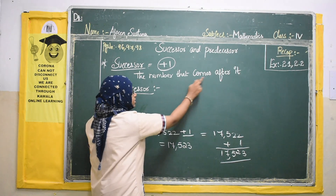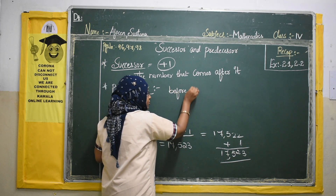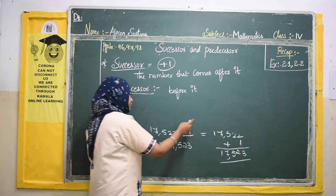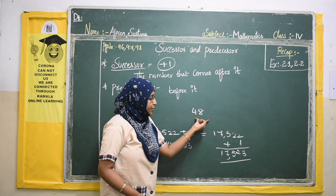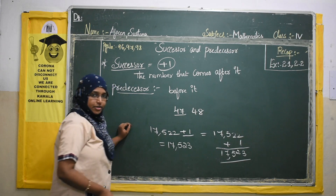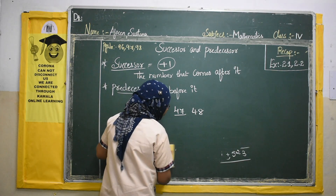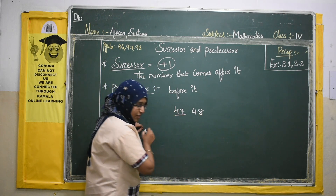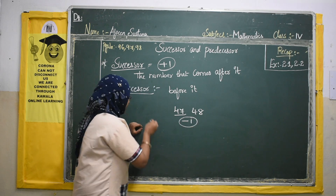Now what is predecessor? Successor is the after number; predecessor is the before number — the number that comes before it. Now if we take the example 48, the number that comes before 48 is 47. Now we will take some large numbers and find the predecessor. For 48, what we did is: 48 minus 1 gives us 47. So predecessor means minus 1.